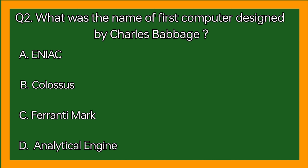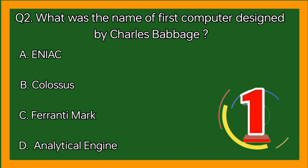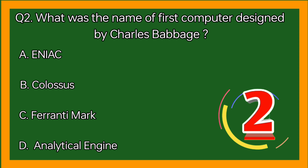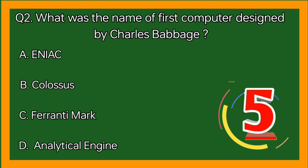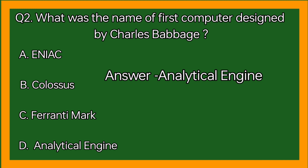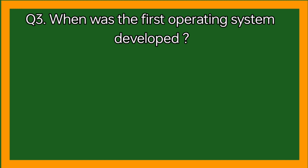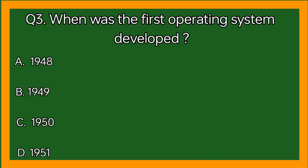Question 2: What was the name of the first computer designed by Charles Babbage? Option A: ENIAC, option B: Colossus, option C: Ferranti Mark, option D: Analytical Engine. Correct answer: Analytical Engine.